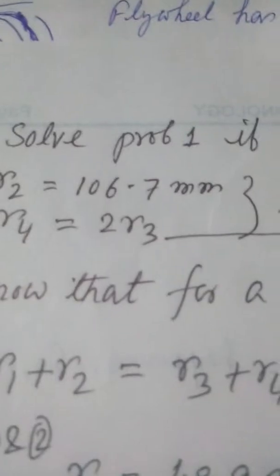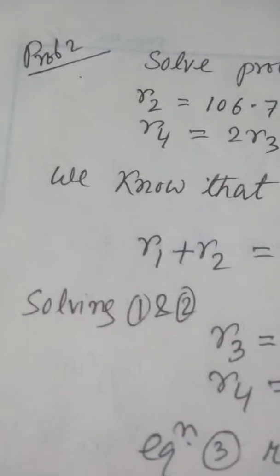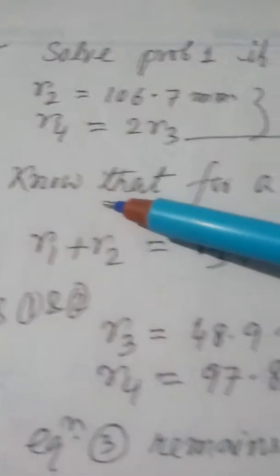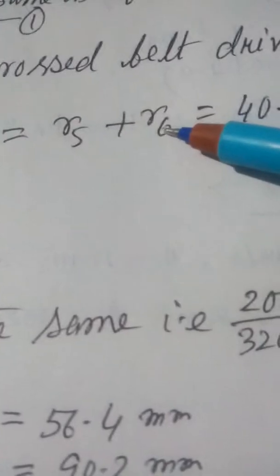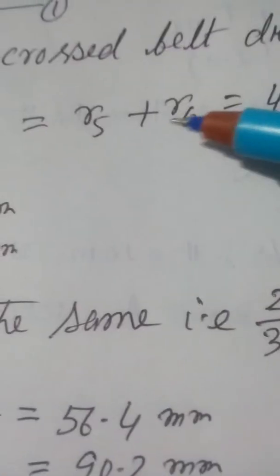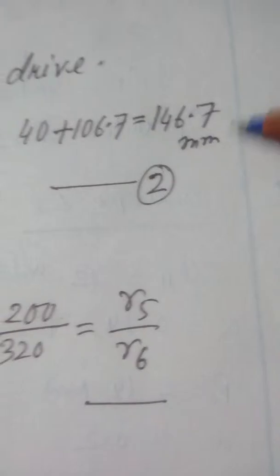Now solving the same problem for a cross belt drive: R2 and the speed ratio equation remain the same. The most important change is that for a cross belt drive, R1 + R2 = R3 + R4 = R5 + R6. Since R1 and R2 are known, this sum equals a constant — say 146.7mm.